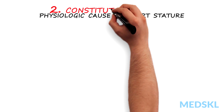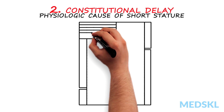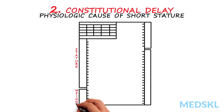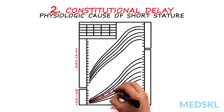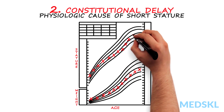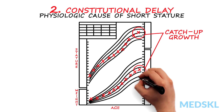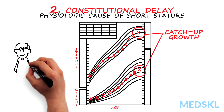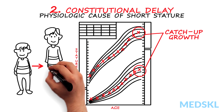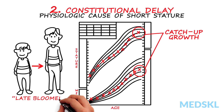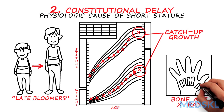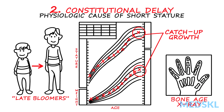The second pattern shows another physiologic cause of short stature: constitutional delay of growth. This is when a child's growth curve decreases during adolescence before exhibiting catch-up growth later. Constitutional delay of growth can run in families, and parents often report being late bloomers. A bone-age x-ray can aid in determining a patient's future growth potential.